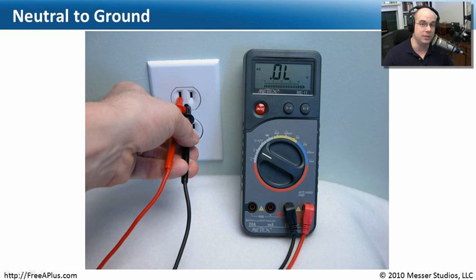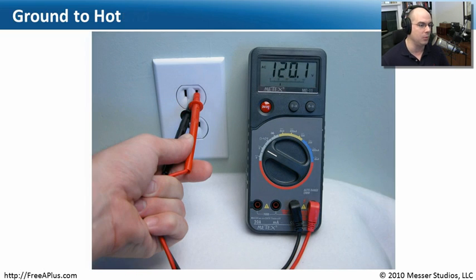And if I check my ground to hot, my hot is on the right side of my outlet and ground obviously still down there at the bottom. You'll see that I'm getting 120 volts across those particular connections. That is exactly what I would expect to see in that particular case.